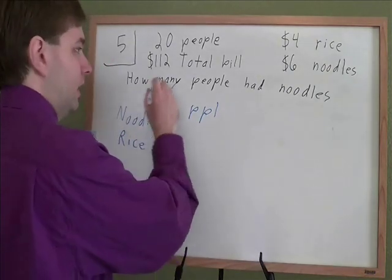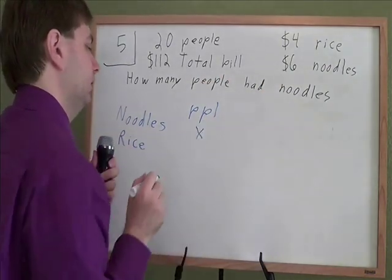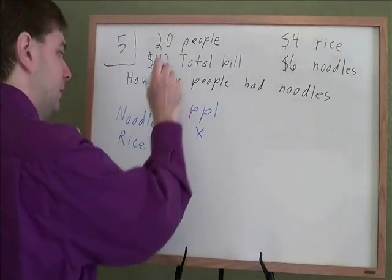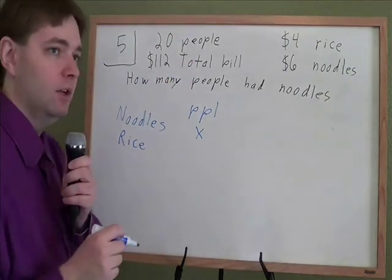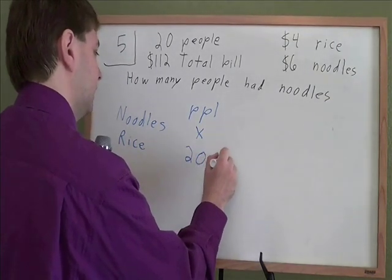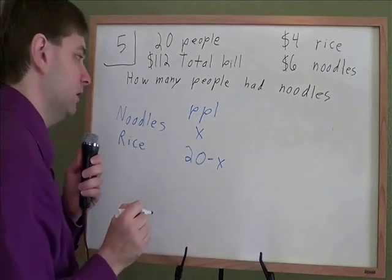Now, since we're looking for how many people had noodles, we're just going to say that x people had noodles. Now if there's 20 people and x of them have noodles, how many have rice? Well, the rest of them. All 20 people minus whoever had noodles, that's how many people will have rice.